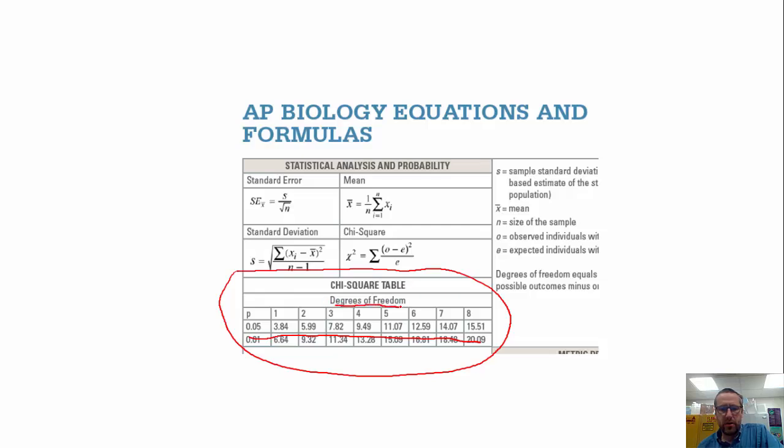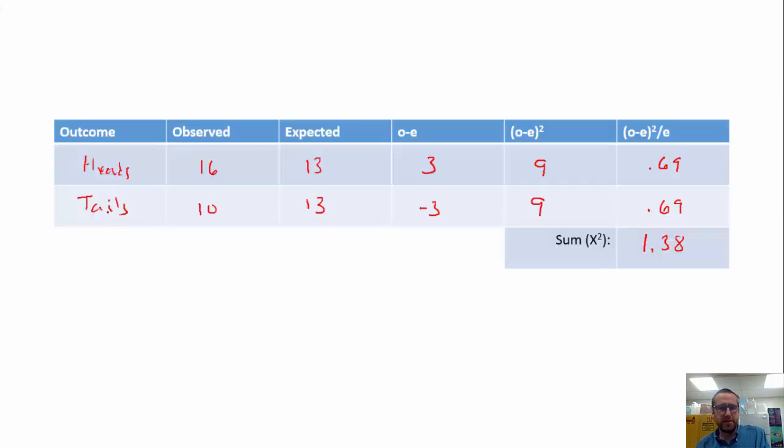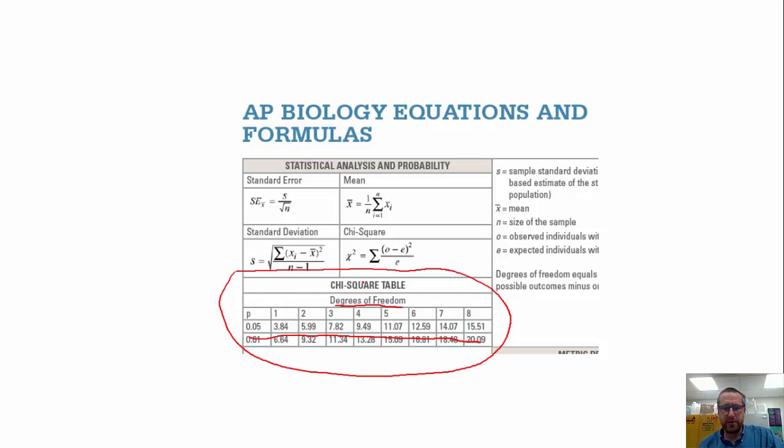So we need to figure out this degrees of freedom thing, because that's 1, 2, 3, through 8. And the degrees of freedom are the number of possible outcomes minus 1. So if we go back to here, we have heads and tails. We have two possible outcomes. So degrees of freedom is number of outcomes minus 1, so we actually have one degree of freedom.